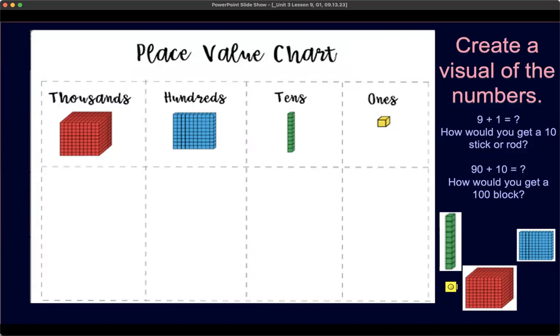What would that look like? Again, the more advanced question would be 90 plus 10. How would you get a hundred block? I want your child to be able to explain this to you, this thought process. Pause the video and go do that now.